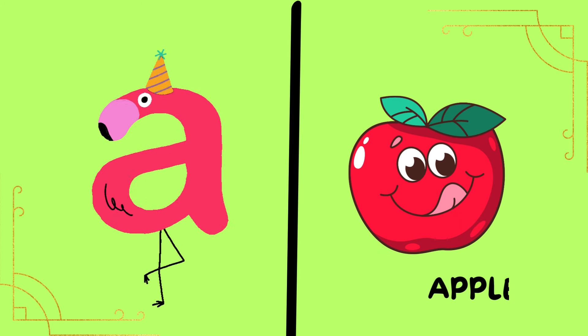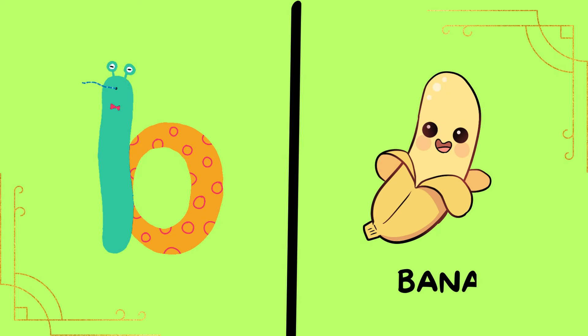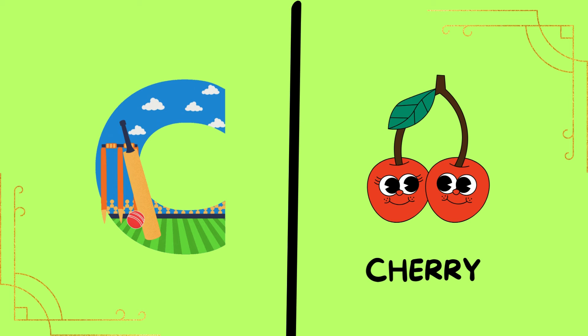A is for apple. A is for apple. B is for banana. B is for banana. C is for cherry. C is for cherry.